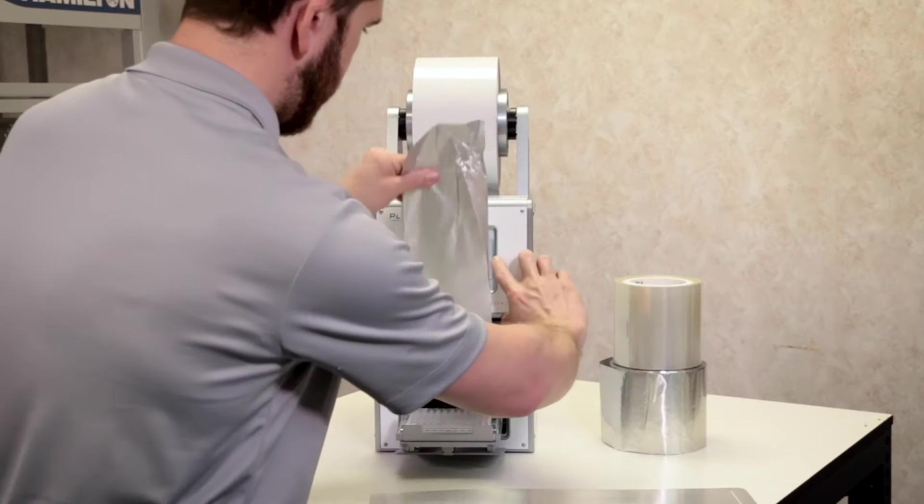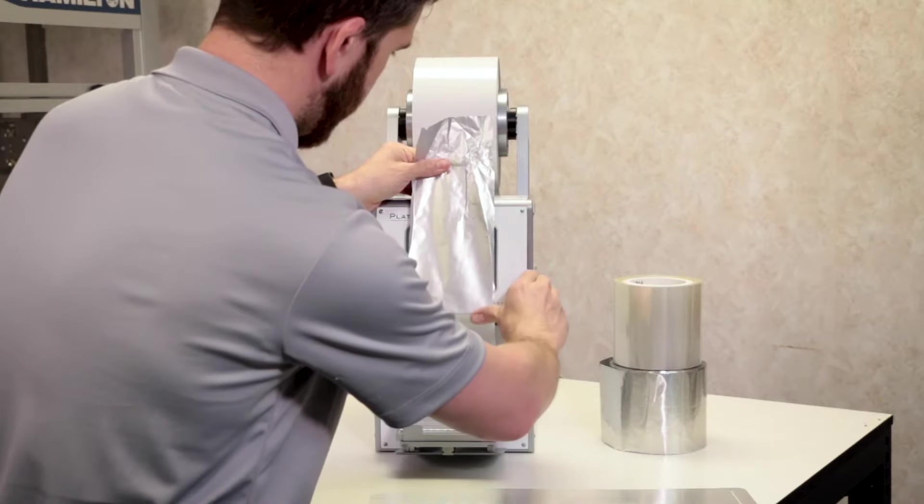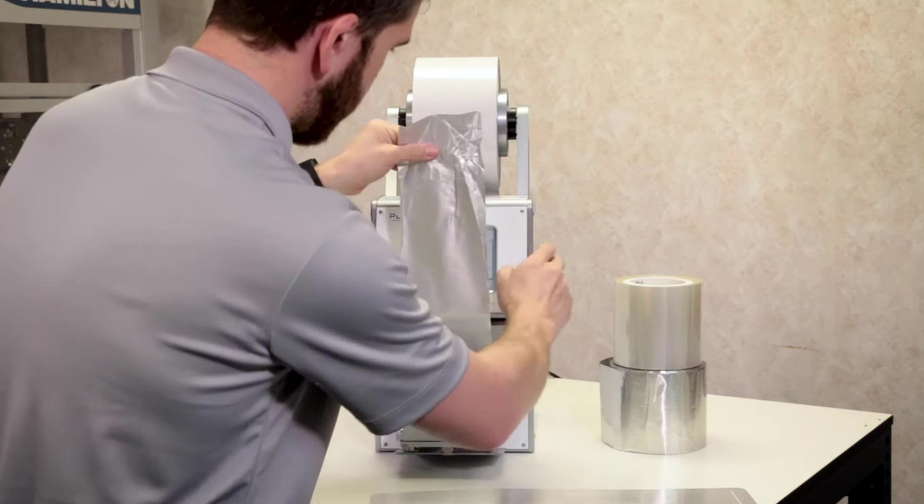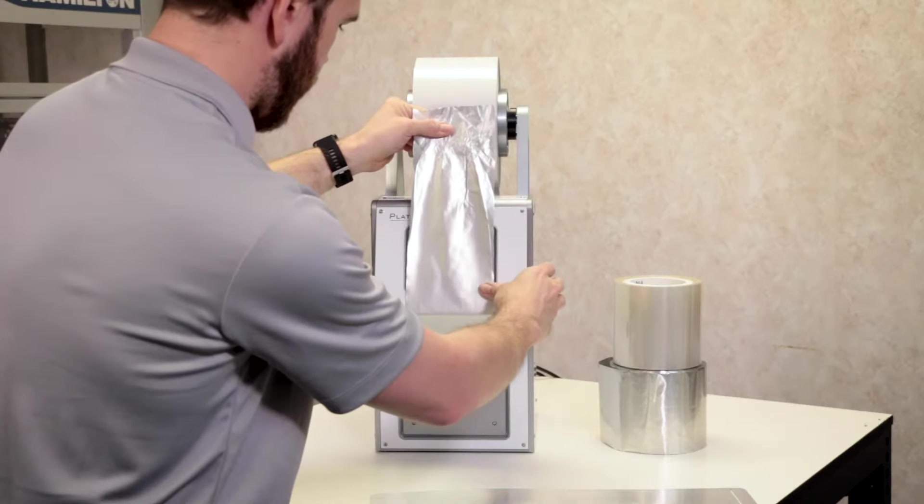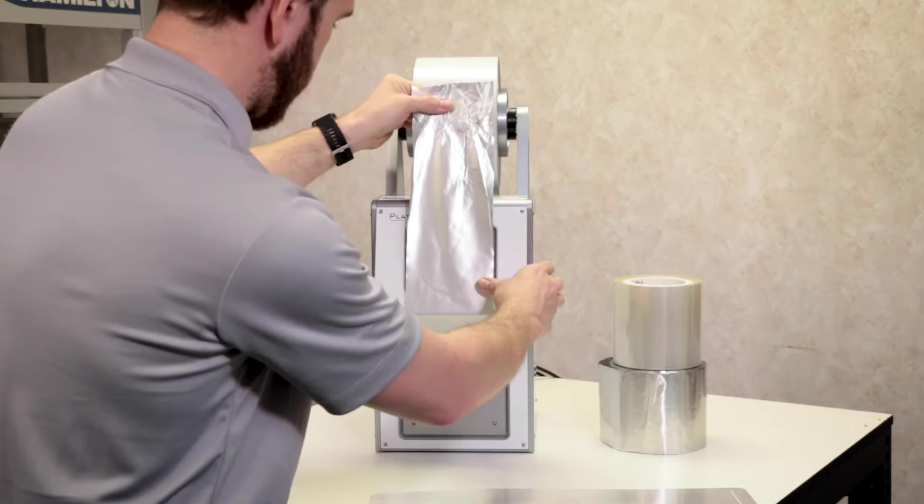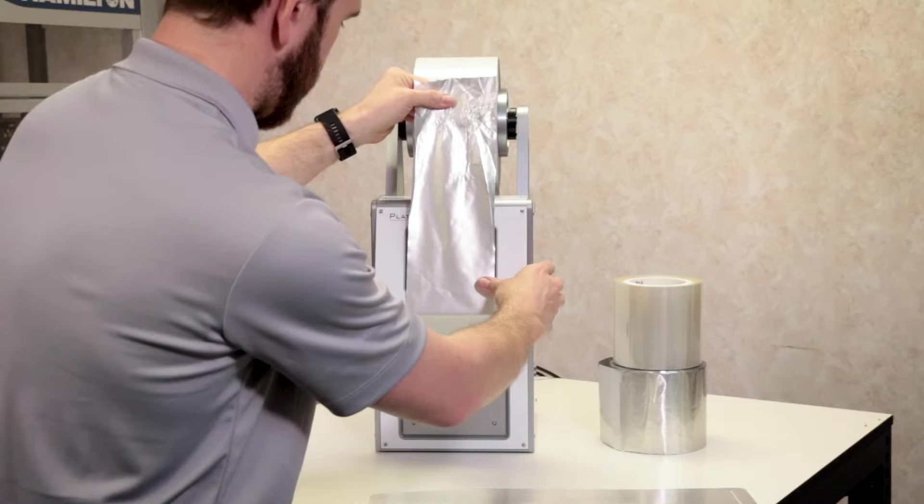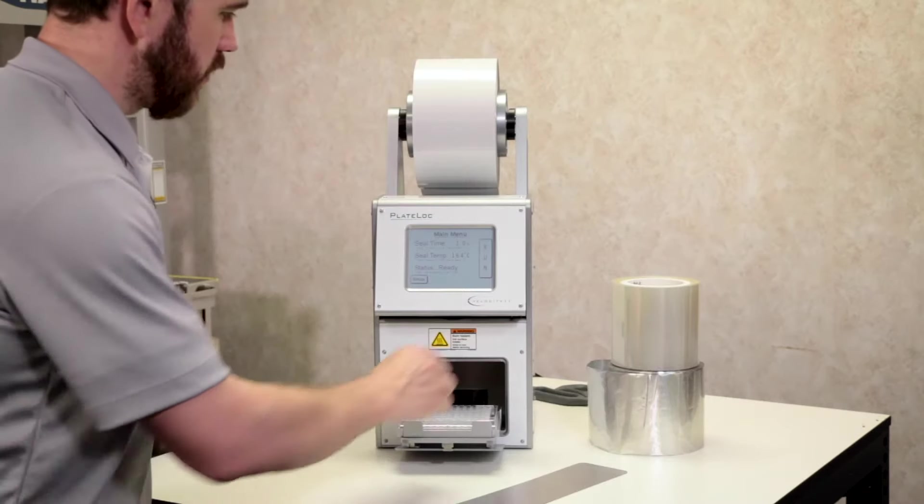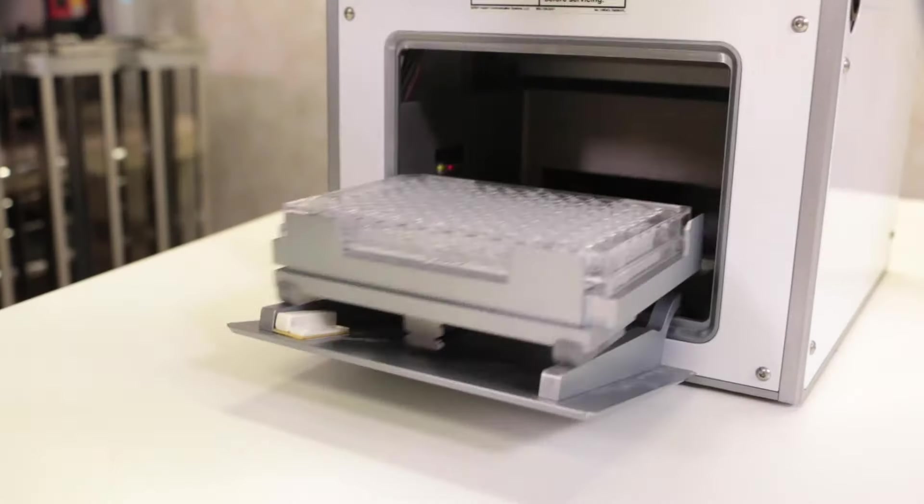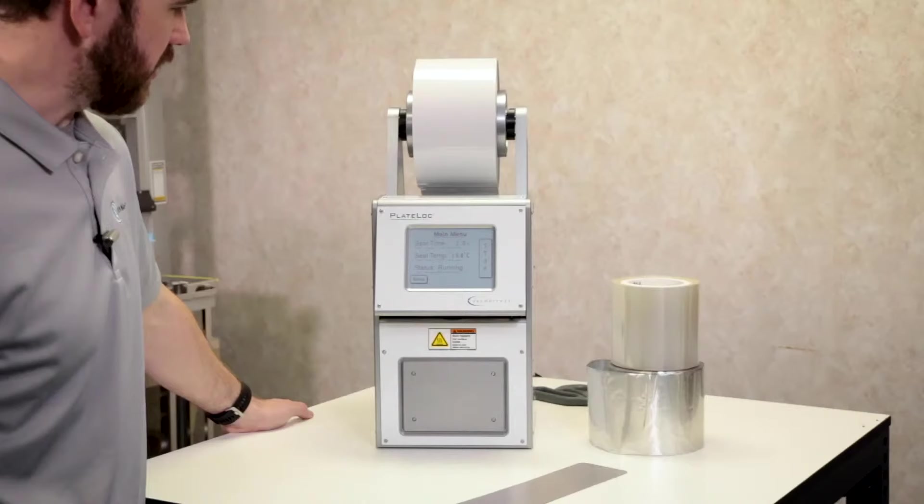Note the location of the run button. Pull the foil over the screen and line up along the edges and hit run. You will need to run the plate lock through another cycle to make sure everything is sealing properly.